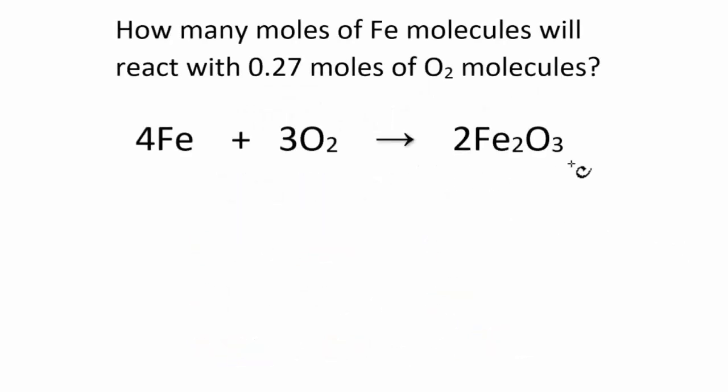So for this problem, the equation's already balanced, so we don't need to do that. We have a 4 to 3 to 2 ratio. So let's write down what we have and what we're looking for. We're asked how many moles of Fe molecules, so we don't know Fe. Let's just call it x. And we're given 0.27 moles of oxygen molecules. First, we can estimate. We see it's a 3 to 4 ratio. So 3 is to 4 as 0.27 is 0.3 something, 0.35. So we have a general idea of a number that we'll end up with.